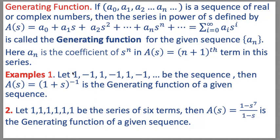For example, suppose 1, -1, 1, -1, 1, -1, ... be the sequence. Then a(s) = 1 + s raised to power -1 is the generating function of this sequence. Suppose 1, 1, 1, ... be a series of 6 terms. Then a(s) = (1 - s^7) / (1 - s) is the generating function of this sequence. So the generating function is the series in power of s written as a0 + a1·s + a2·s² + ... + an·sⁿ, or in short sigma i=0 to infinity of ai·s^i.